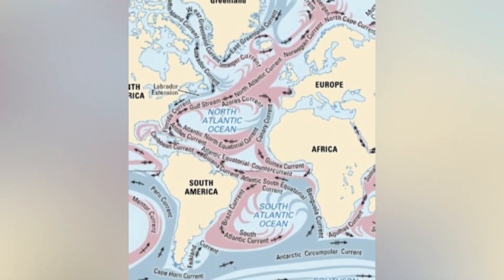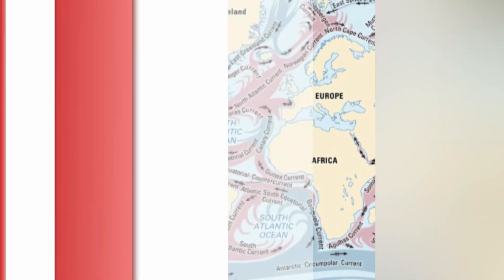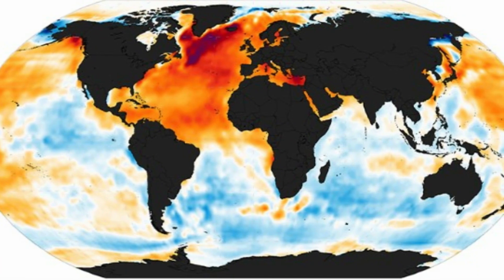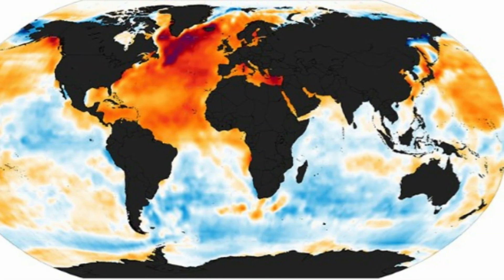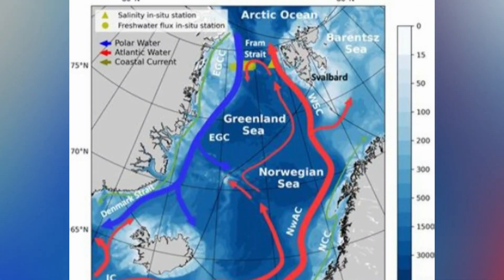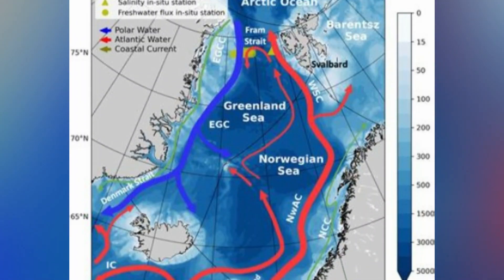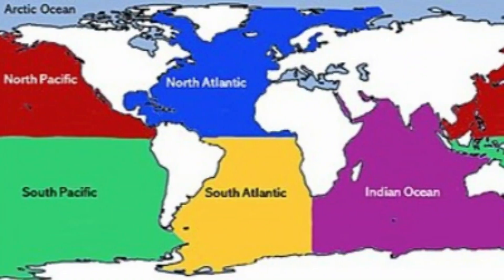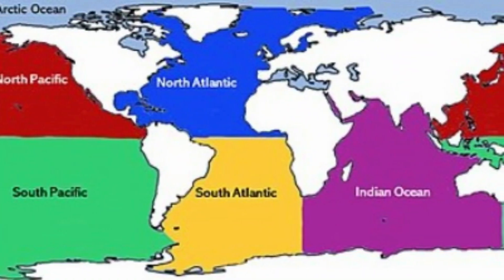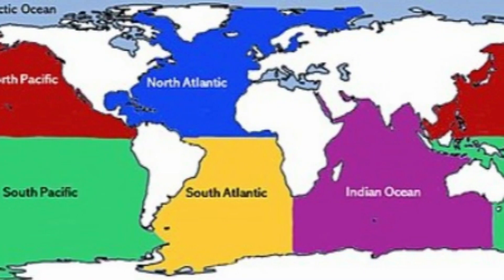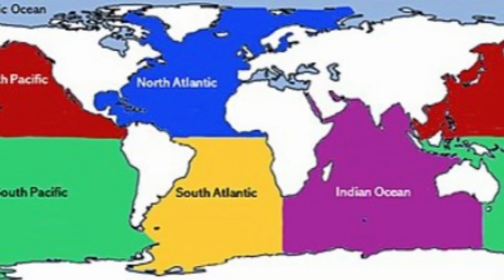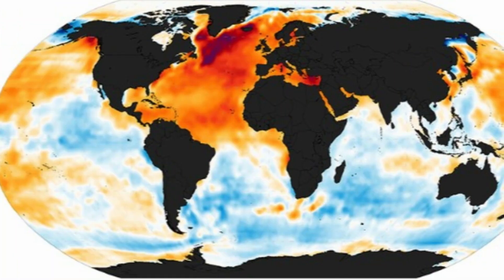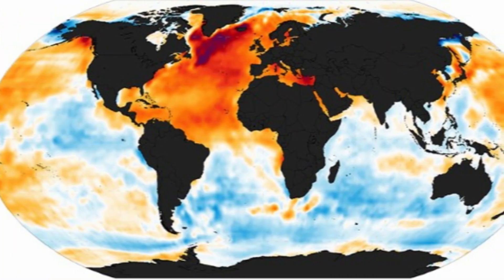The Atlantic Ocean experiences greater temperature variations than the Pacific. This is due to its narrower shape and its proximity to the Arctic and Antarctic regions. The cold waters from these polar areas mix with the warmer waters from the tropics, resulting in varied temperatures across the Atlantic.